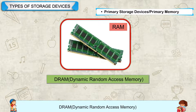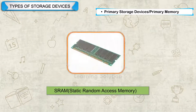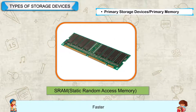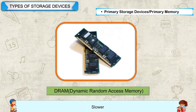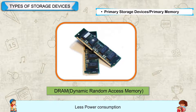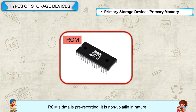DRAM — Dynamic Random Access Memory, and SRAM — Static Random Access Memory. Static RAM is faster, more expensive, consumes more power, and does not need to be refreshed. Dynamic RAM is slower, less expensive, consumes less power, and needs to be refreshed thousands of times per second.